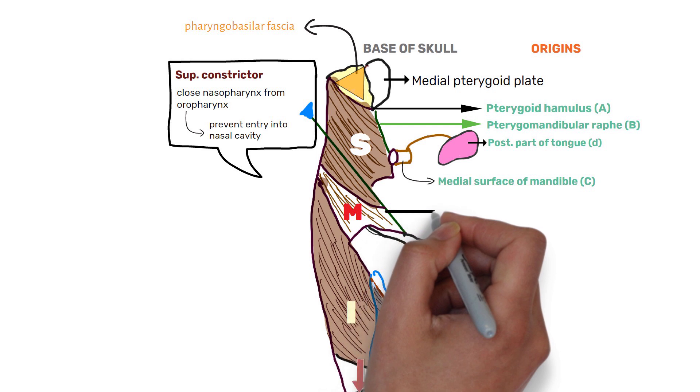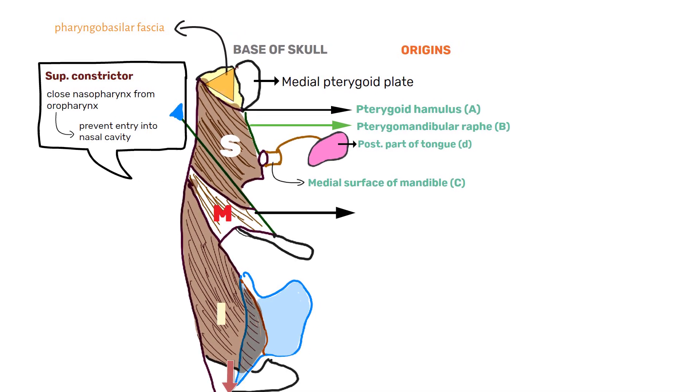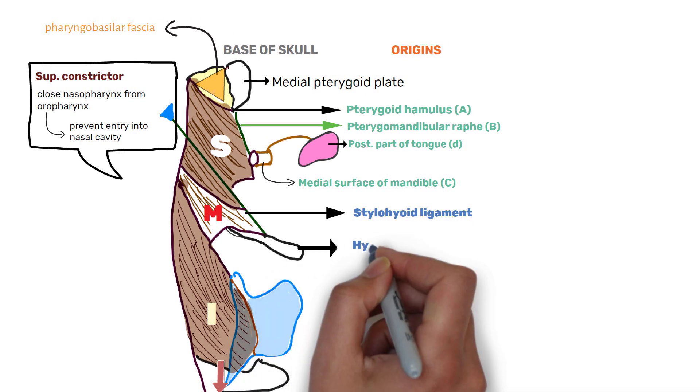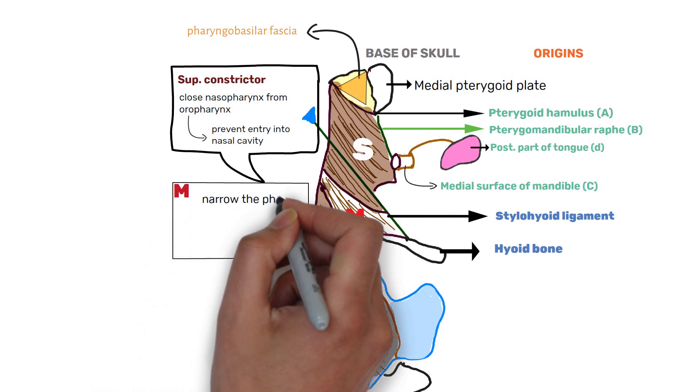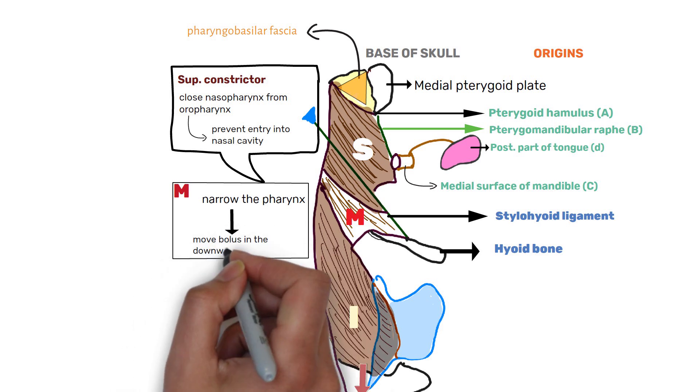Second muscle is middle constrictor muscle. It originates from the lower part of stylohyoid ligament and greater and lesser cornua of hyoid bones. Its function is to narrow the pharynx during swallowing, thus helping the bolus to move in the downward direction.